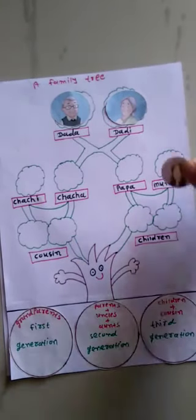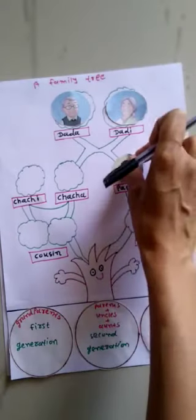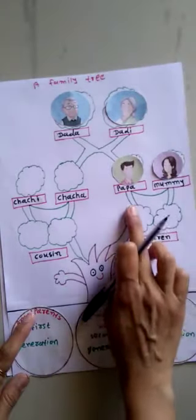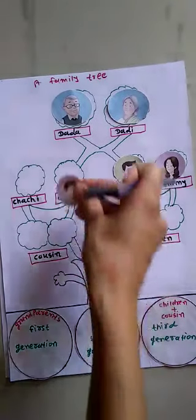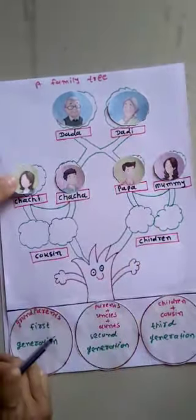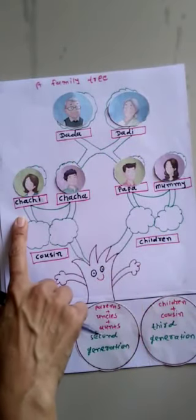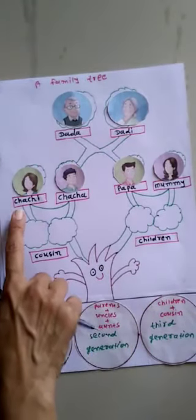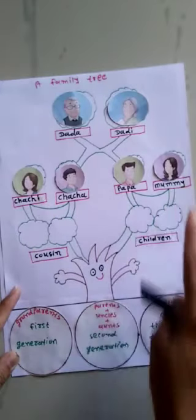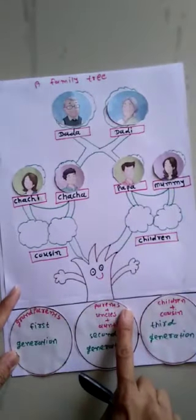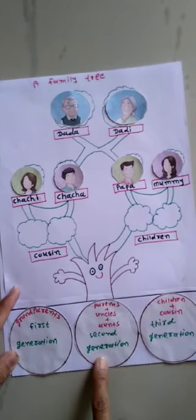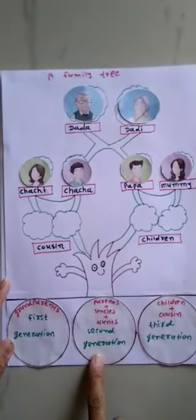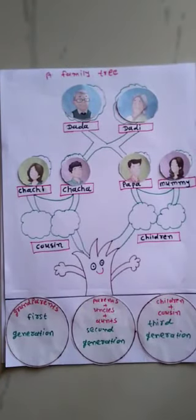This is Mummy and this is Papa. This is Cha-cha and this is Cha-chi. Mummy, Papa, Cha-cha, and Cha-chi — that means your parents, uncle, and aunt — form the second generation of a family tree.